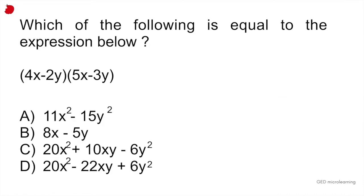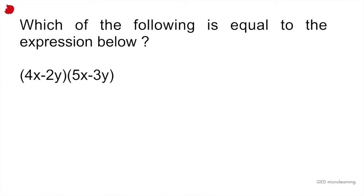Question 3 is an algebra problem, and it says, which of the following is equal to the expression below? What you have to do to solve this is use something that is known as the FOIL method. The FOIL method is an acronym for the way in which you're going to multiply these numbers out. The F stands for first, O for outer, I for inner, and L for last. So let's start with the first one, with first.